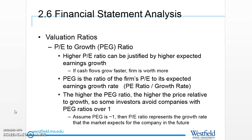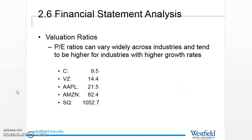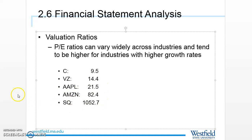Since PEG equals P/E divided by growth rate, and PEG should be one, the growth rate must equal the P/E ratio. So if P/E is 13, the market expects 13% growth. This means we can read the P/E ratio as an approximation of the market's expected growth rate: a P/E of 35 implies 35% expected growth. Applying this back to our examples, it suggests roughly 9.5% growth expected for Citigroup, 14% for Verizon, 21% for Apple, 82% for Amazon, and 1,000% for Square — though this is just one interpretation.